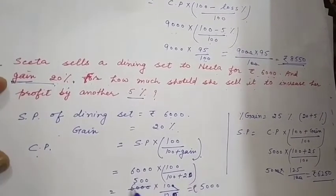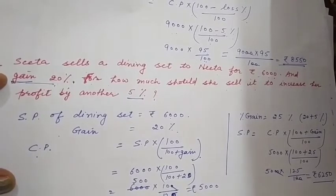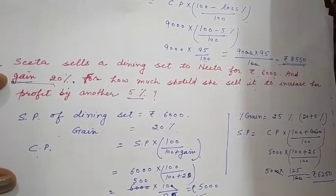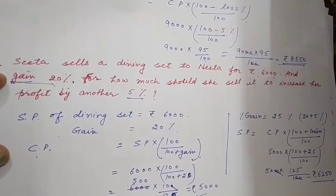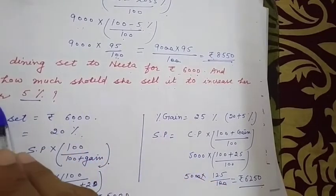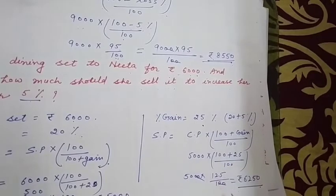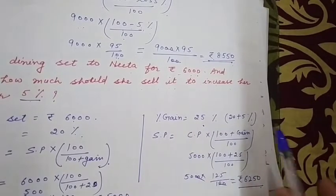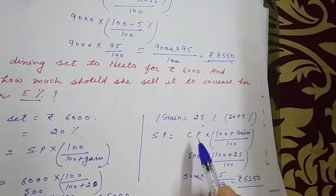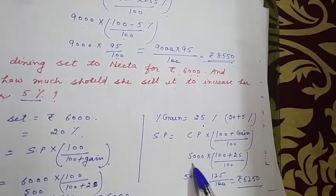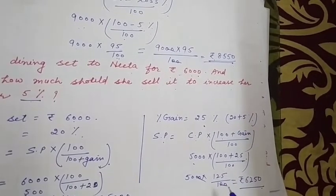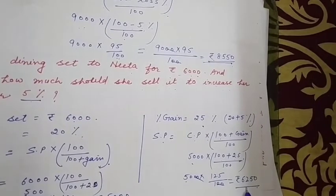पहले cost price निकालेंगे — SP = ₹6,000, gain = 20%। Formula apply करने पर CP = ₹5,000 आएगा। अब 25% gain पर selling price: SP = CP × (100 + Gain%) ÷ 100 = 5,000 × 125 ÷ 100 = ₹6,250।